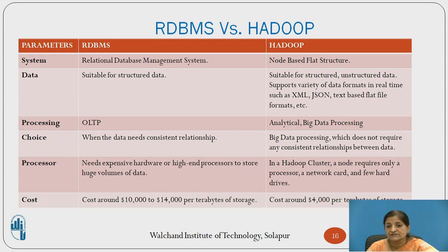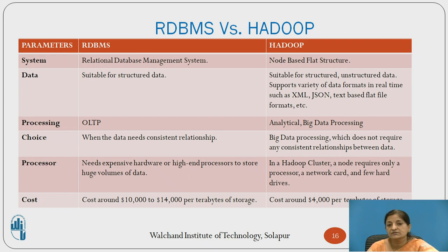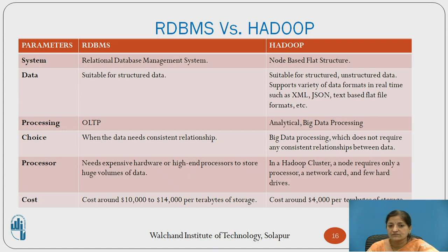RDBMS is a good choice when data needs consistent relationships and high consistency is required. Hadoop is used for big data processing that does not require consistent relationships between data. As far as processor is concerned, RDBMS needs expensive or high-end hardware to store huge volumes of data because it follows vertical scalability. In a Hadoop cluster, a node requires only a processor, a network card, and a few hard drives — basically commodity hardware with moderate configuration. In terms of cost, RDBMS goes around 10,000 to 40,000 dollars per terabyte of storage, whereas Hadoop costs about 4,000 dollars per terabyte — a significantly large difference.